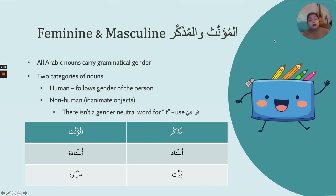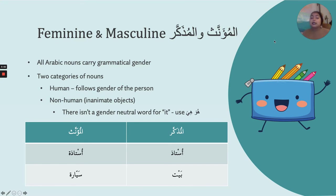There isn't a gender-neutral way of categorizing a noun. What some people have used is Arabic's singular, dual, and plural forms. Some folks have decided to use the dual; some have decided to use the plural; and some people use the masculine and feminine interchangeably to show that you're using both of them.